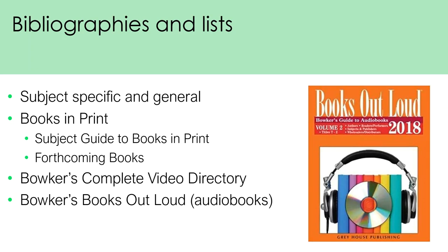The use of bibliographies and lists offers another approach for selecting resources. Often these are subject-specific, but sometimes they can be general too. Academics in a particular area might produce a bibliography containing the definitive works on a topic, and developing a collection in that area should start with a bibliography like this. General lists or databases include things like Books in Print, subject guides, and forthcoming books. There are also resources such as Bowker's Complete Video Directory and Books Out Loud for audiobooks, though these are quite expensive and need regular updating.